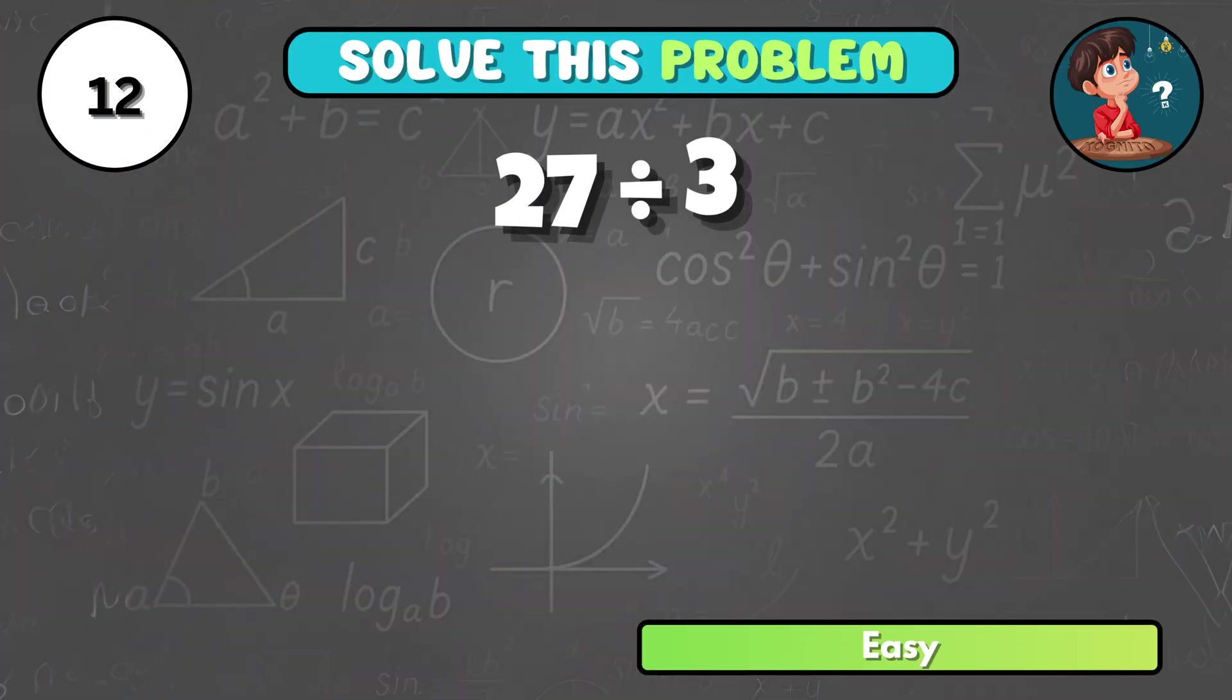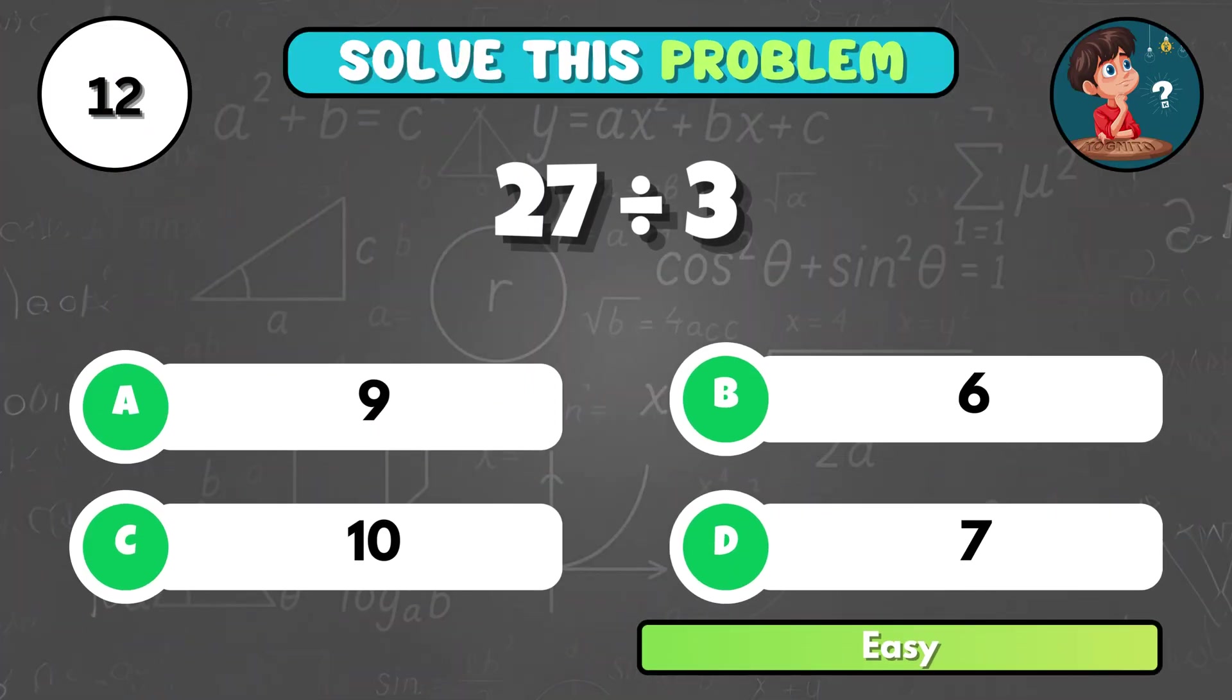What is the answer to 27 divided by 3? That's A, 9.